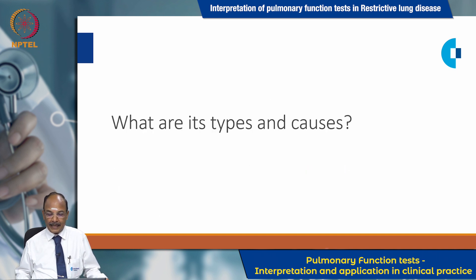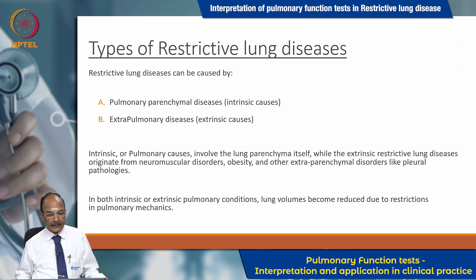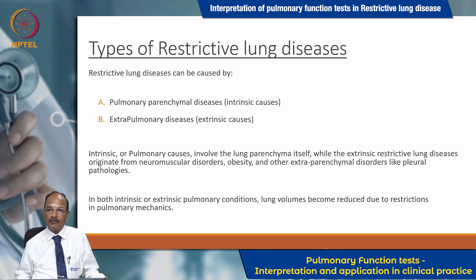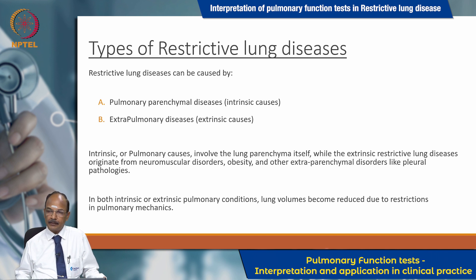What are its types and causes? Restrictive lung diseases can be caused by pulmonary parenchymal diseases, labeled as intrinsic causes, and extra-pulmonary diseases, labeled as extrinsic causes. Intrinsic or pulmonary causes involve the lung parenchyma itself, while extrinsic restrictive lung diseases originate from neuromuscular disorders, obesity, and other extra-parenchymal disorders like pleural pathologies. In both conditions, lung volumes become reduced due to restrictions in pulmonary mechanics.